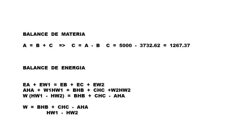Once this step is done, we observe that we have the flow rates of A, B, and C, but we do not know W1 and W2. We also do not yet have the enthalpy values HA, HB, HW1, and HW2.